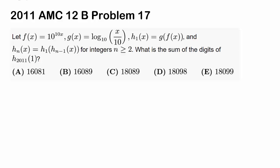Let's take a look at 2011 AMC 12b Problem 17. We have f(x) = 10^(10x), g(x) being the common logarithm log base 10 of x divided by 10, and h₁(x) = g(f(x)). We have hₙ(x) = h₁(hₙ₋₁(x)) for integers n ≥ 2. We wish to find the sum of the digits of h₂₀₁₁(1).